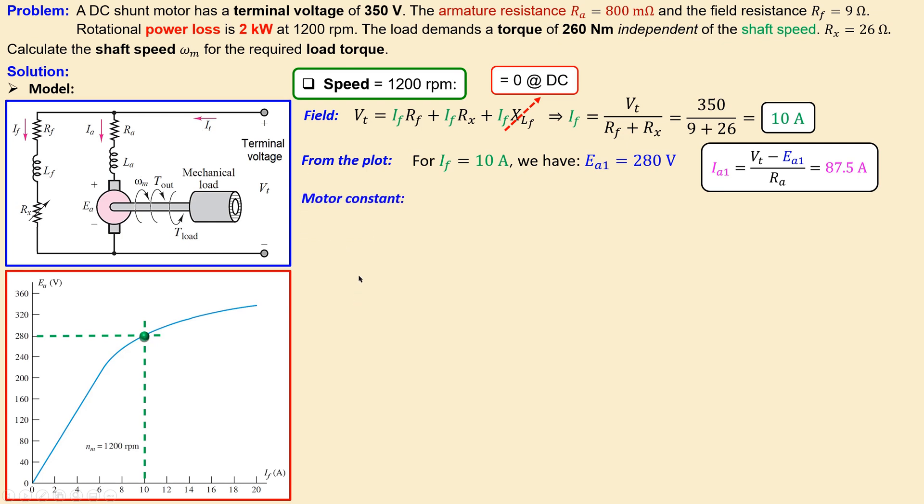An important parameter is the motor constant. The back EMF and the rotation speed will give you the motor constant that is related in this fashion. We can first determine the shaft speed in radians per second in another unit because we have it given in rpm. So I do 2π over 60 times the given shaft speed.